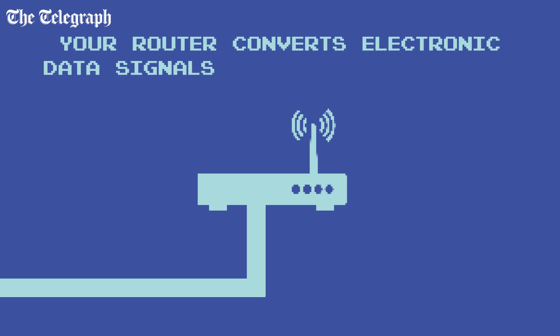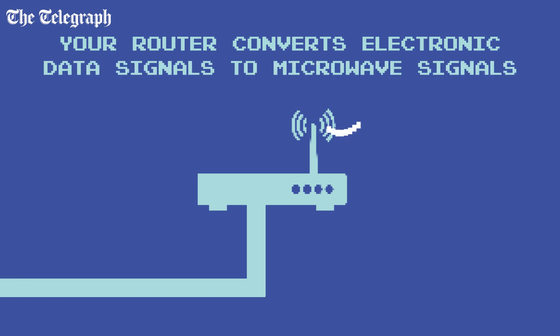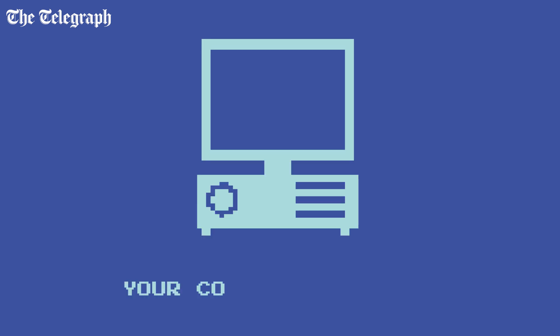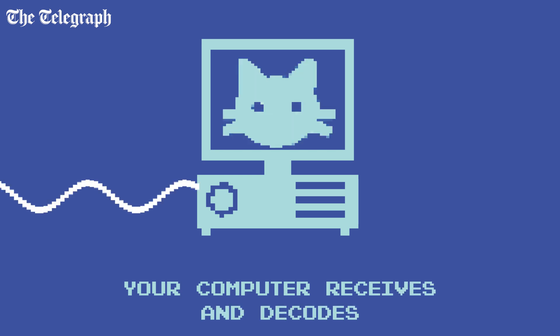Your router is a tiny computer which plugs into the internet and converts an electrical signal into a digital signal that is transmitted from an antenna as microwave radiation. Your computer also contains an antenna to receive the signal, which it then decodes, as well as a transmitter to send data back to the router.